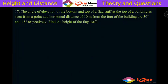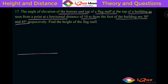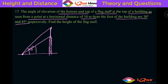Now let's take up the next question. It says the angle of elevation of the bottom and top of a flagstaff at the top of a building, as seen from a point at a horizontal distance of 10 meters from the foot of the building, are 30 degrees and 45 degrees. In the previous question it was 60 and 45 — this time the angles are different, 30 and 45. So once again we take a point on the ground, a building, and a flagstaff. The larger angle is 45 degrees and the smaller angle is 30 degrees. Let's assume the tower height is H and the flag height is X. Points are labeled A, B, C, D, and distance AB is given as 10 meters.